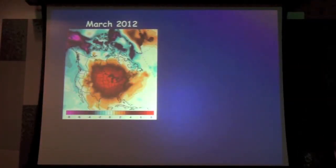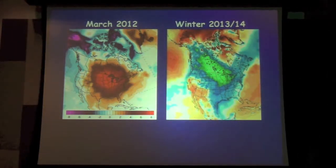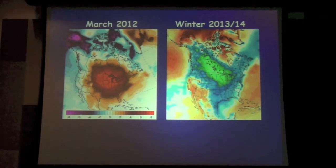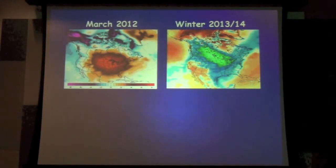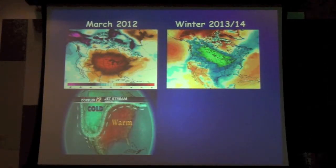Go back just two years to March of 2012. We broke literally thousands of high temperature records. This is pretty much bullseye right on Detroit. Those red colors there are showing you the temperatures that are warmer than average. Then this past winter was just the opposite. Those colors are showing you where it's colder than average. So now you know what the jet stream has to do with this sort of a thing. In March 2012, we had this big southward dip over the west, big northward swing over the east, allowing all that warm air to come right up here into Detroit.